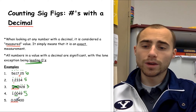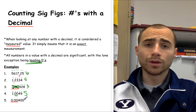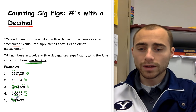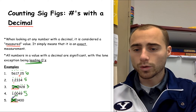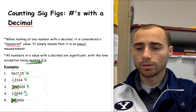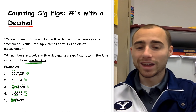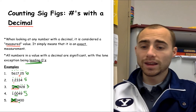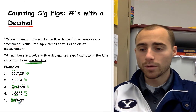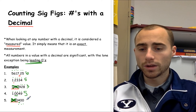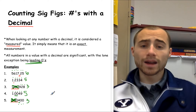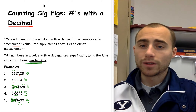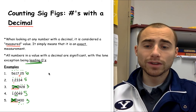Our last example: 0.00400. We have a lot of zeros in this one. We do not count the leading zeros — any zeros that come at the beginning, cross them out. At the end, however, once we hit a number, everything else is significant. So this number would have three significant figures. The only thing we're not counting in numbers with a decimal are those leading zeros.